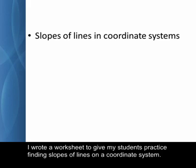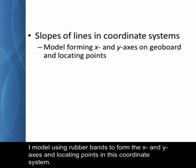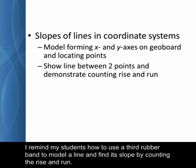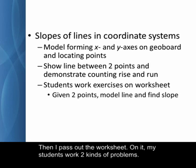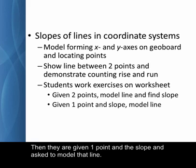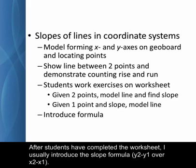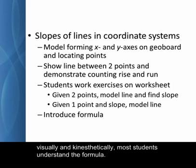I wrote a worksheet to give my students practice finding slopes of lines on a coordinate system. The worksheet includes specific exercises and images of a geoboard like the one I've shown here with x and y between positive and negative 5. I model using rubber bands to form the x and y axes and locating points in this coordinate system. I remind my students how to use a third rubber band to model a line and find its slope by counting the rise and the run. Then I pass out the worksheet. On it, my students work two kinds of problems. First, they're given two points and ask to model the line and find its slope. Then they're given one point in the slope and ask to model that line. They model each exercise on their geoboard, then record the work on the worksheet. After students have completed the worksheet, I usually introduce the slope formula, y2 minus y1 over x2 minus x1. Our pre-algebra curriculum doesn't require it, but having experienced counting the rise and the run visually and kinesthetically, most students understand the formula.